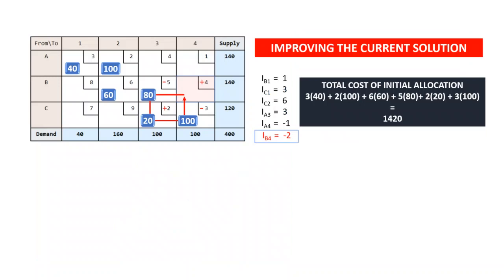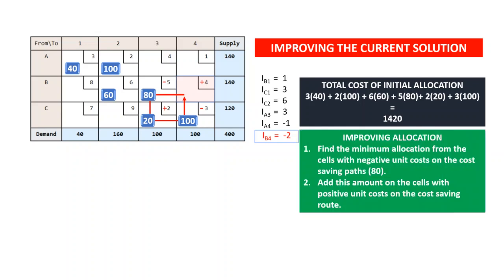To summarize: for this allocation — which is the Northwest corner rule solution as the initial feasible solution — the improvement indices for each of the empty cells are 1, 3, 6, 3, minus 3, and the smallest is minus 2, associated with the route from B to 4, which is the cost-saving route. Because we save minus 2 per unit on route B to 4, it makes sense to allocate as much as possible on that route to maximize savings. Let's look at how to allocate as much as possible on that route.